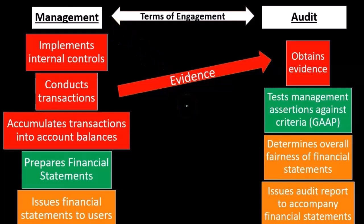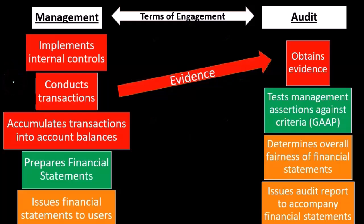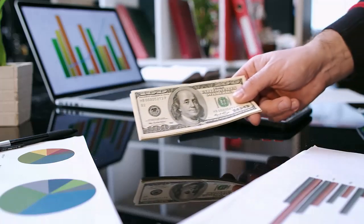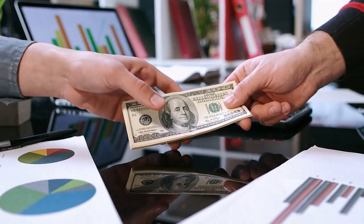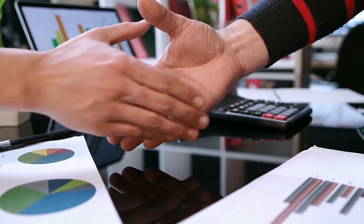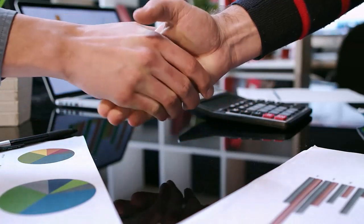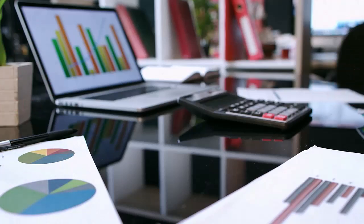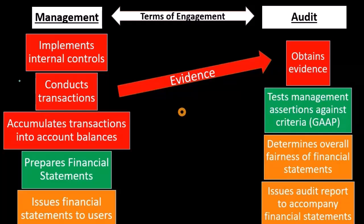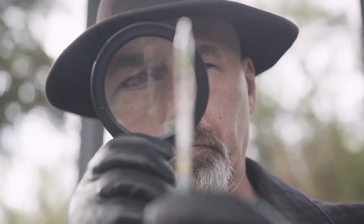We're going to gather evidence on the internal controls and the transactions, and the accumulation of transactions into the balances — that's what we're going to test. Internal controls is important here because we're not just going to test the transactions; we're going to test the controls. For a large company, those controls need to be strong because we're not going to be able to test enough transactions in many conditions.